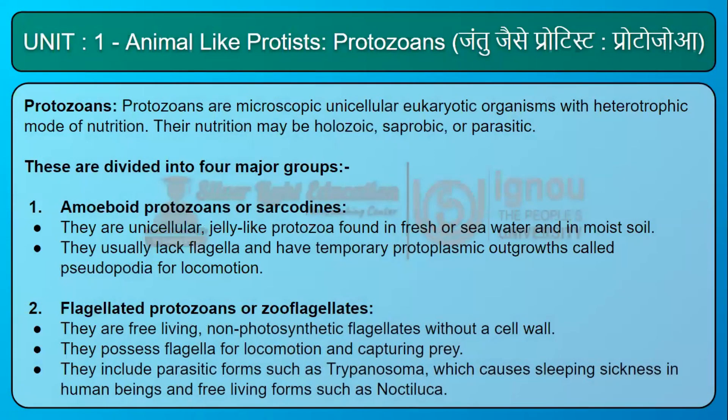Protozoans are microscopic unicellular eukaryotic organisms with a heterotrophic mode of nutrition. Their nutrition may be holozoic, saprobic, or parasitic.